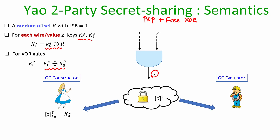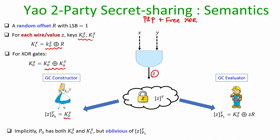A share for the value Z available with Alice will be the 0-key. The share available with Bob for the bit Z will be the actual key corresponding to the actual value of Z — namely, if Z equals 0, Bob will have the 0-key; if Z equals 1, Bob will have the 1-key. Alice's share will always be the 0-key, and implicitly Alice will have both keys corresponding to Z, but as per the sharing semantic her share is the 0-key.